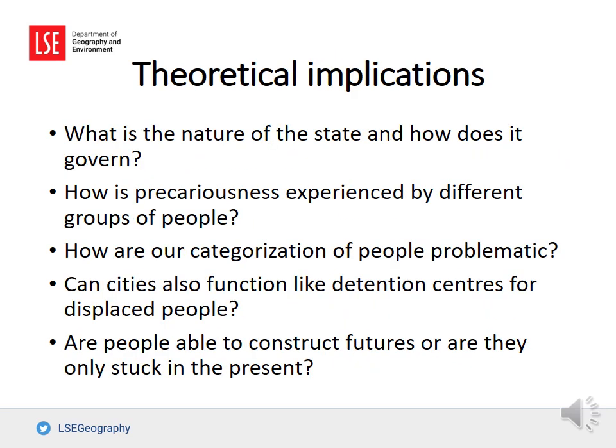Beyond practical implications, there are also important theoretical questions raised by urban humanitarian work. The influx of refugees into poor areas where humanitarian intervention may provide higher quality resources than the state provides its own citizens raises questions around the nature of the state and how it governs. Supporting refugees and extending this support to local populations also unravels how precariousness is experienced by different groups. We can also probe how categorizing people as refugees or migrants can be problematic, or how cities can function like detention centers, or whether people are able to construct futures or are only stuck in the present.